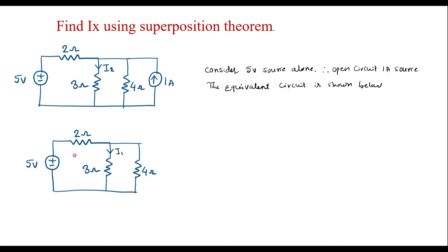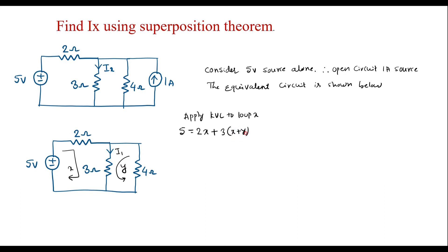Now we will find I1 using loop analysis. Assume that the current through this loop is X and this loop is Y. Apply KVL to loop X. We can write: 5 is equal to the voltage across the 2-ohm resistor, which is 2X, plus the voltage across the 3-ohm resistor, which is 3(X + Y), as both X and Y currents are flowing through the 3-ohm resistor. Simplifying: 5 = 5X + 3Y. Call it equation number 1.